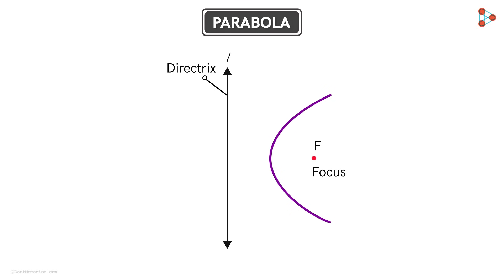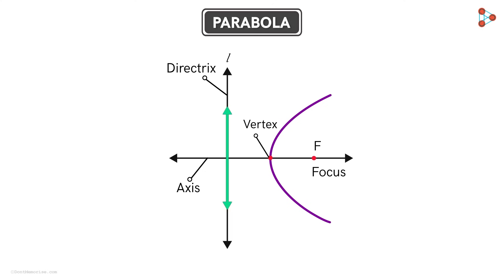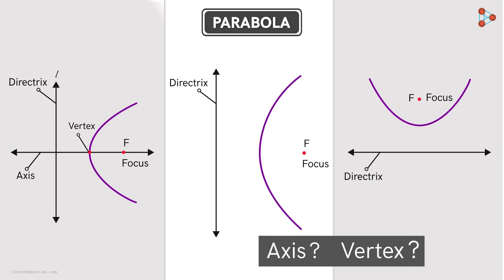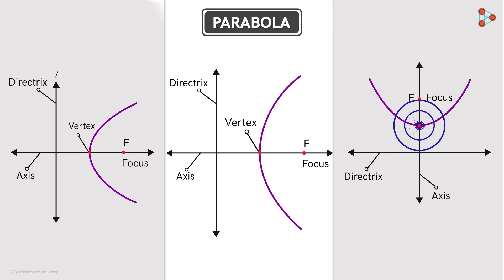Now consider one last thing. In this parabola, let's draw a line passing through the focus and perpendicular to the directrix. Notice that the part of the parabola above the line is the mirror image of its part below this line — that is, the parabola is symmetric about this line. This line for a parabola is called its axis, and the point where the parabola intersects the axis is called its vertex. Note that the distance of the vertex from the directrix is the same as its distance from the focus. For this parabola, this line will be its axis and this point will be its vertex. Similarly for this parabola, this will be its axis and this will be its vertex.